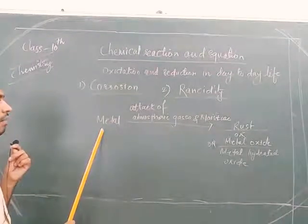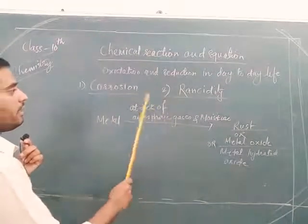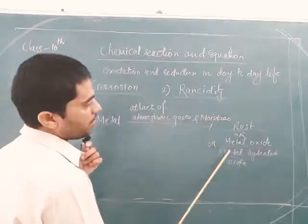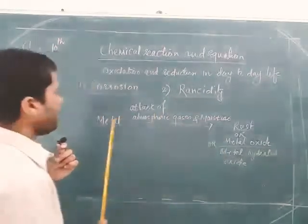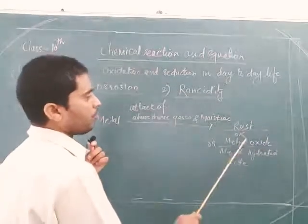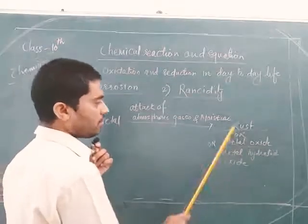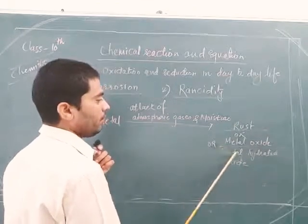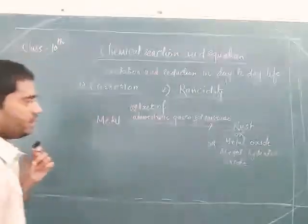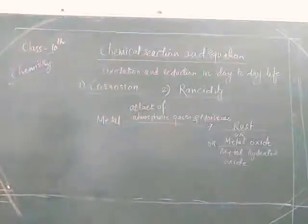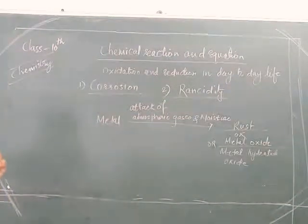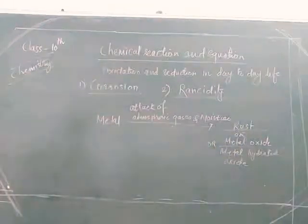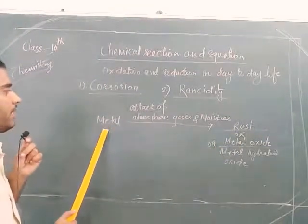This is the reactant, this is the condition, and this is the product. Metal is the reactant, the condition involves atmospheric gases and moisture, and the product is rust — we can also say metal oxide or metal hydrated oxide. Sometimes metal oxide forms, sometimes hydrated metal oxide forms, and together it is called rust.